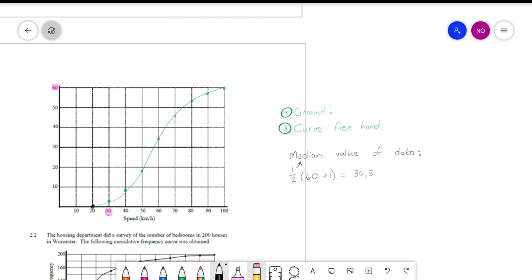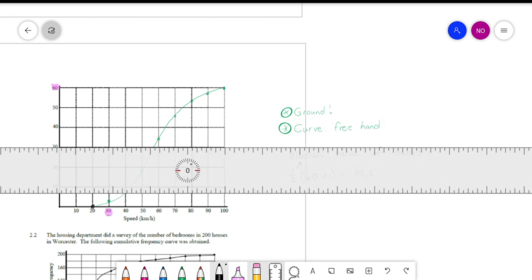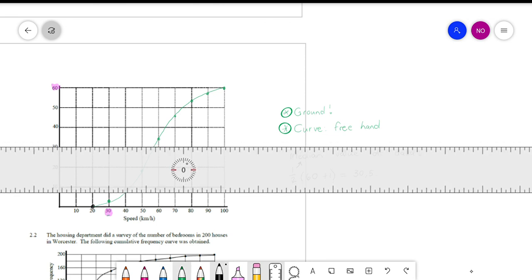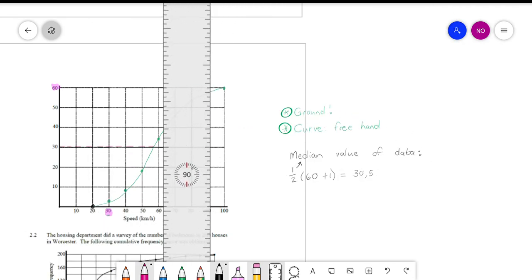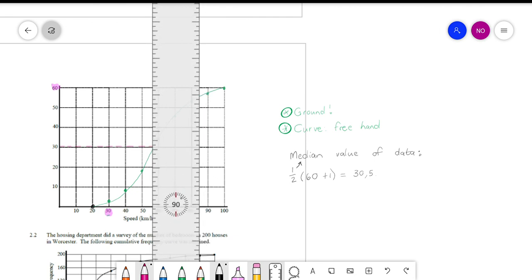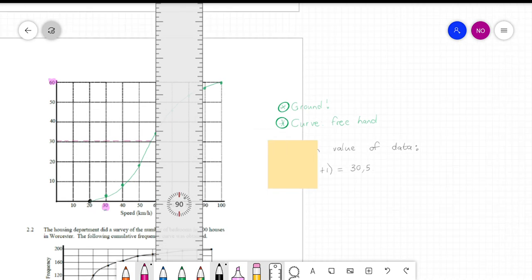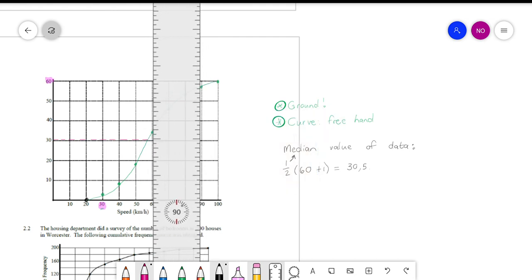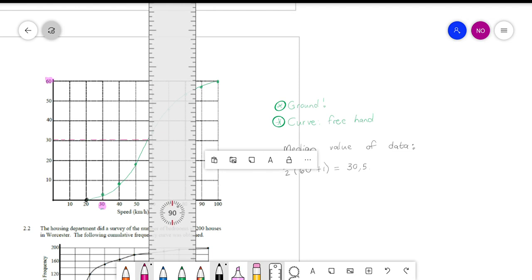But as you can see, 30 and a half is going to be almost on the line for 30, so it's close enough. And then you take your ruler and you draw a dotted line from there to your curve. And where it touches your curve, you take your ruler and you switch it around. And you draw a dotted line straight down.